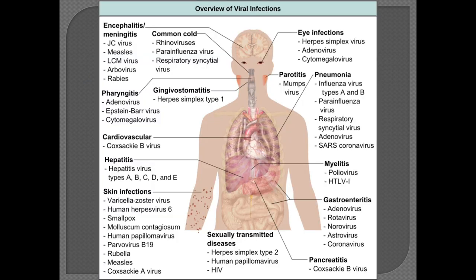Here is an image of different types of diseases caused by different viruses in different parts of the body. You can pause the video and take a screenshot to study and memorize all these points. The image shows common cold, encephalitis, pharyngitis, cardiovascular hepatitis, skin infection, sexually transmitted diseases, pancreatitis, myelitis, parotitis, pneumonia, and eye infection, along with the viruses that cause each of these diseases.